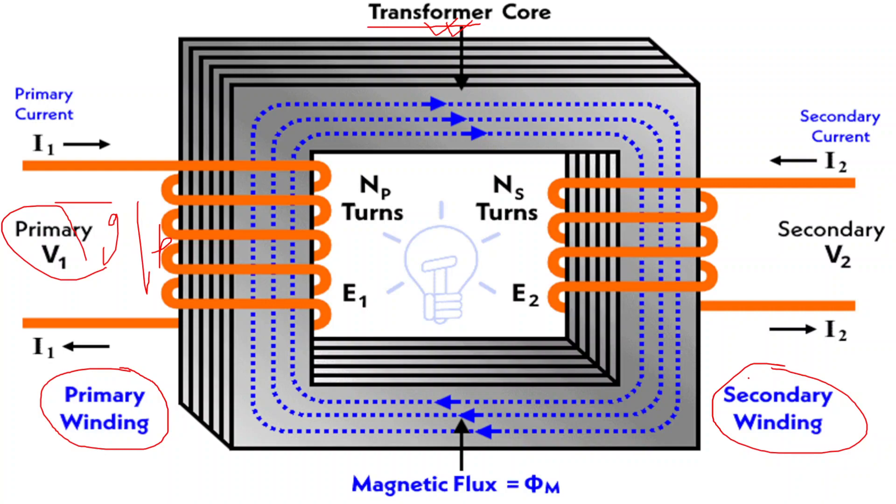The voltage induced in the secondary coil is proportional to the ratio of the number of turns in the secondary coil to the number of turns in the primary coil. Mathematically, it can be expressed as V1 by V2 is equal to N1 by N2.